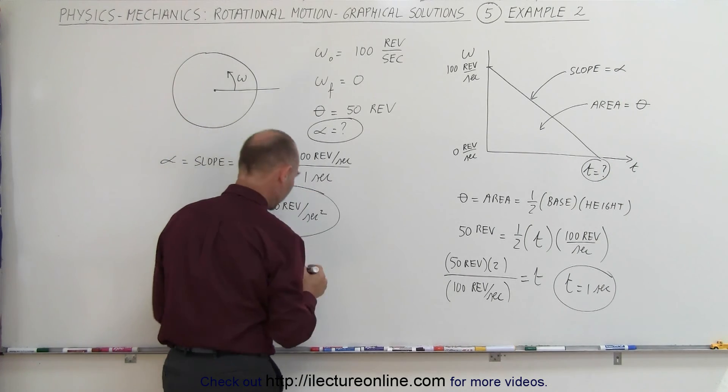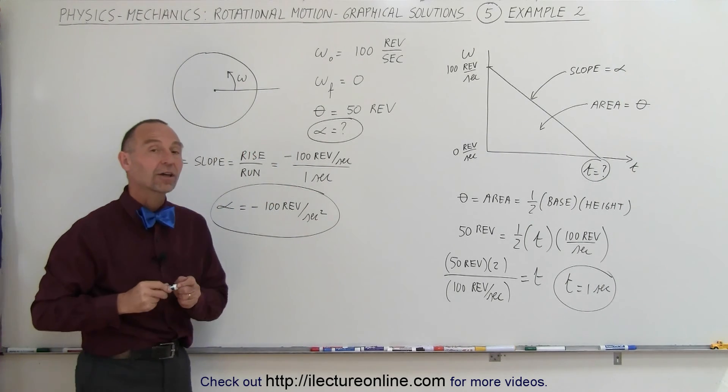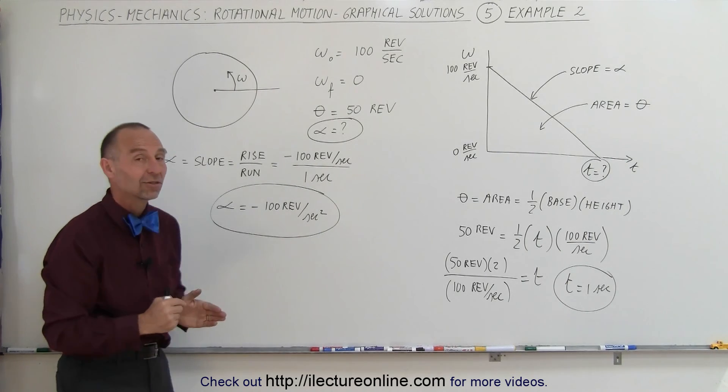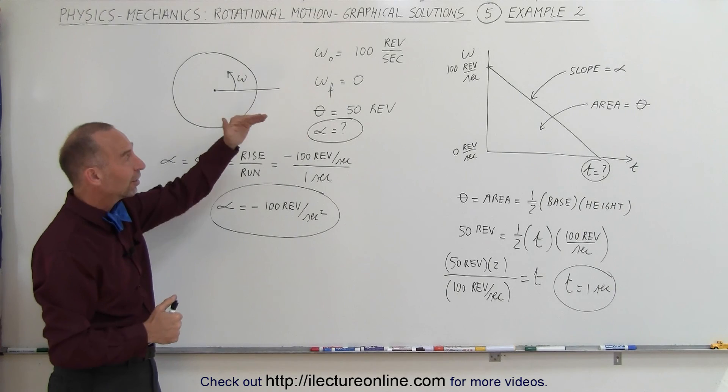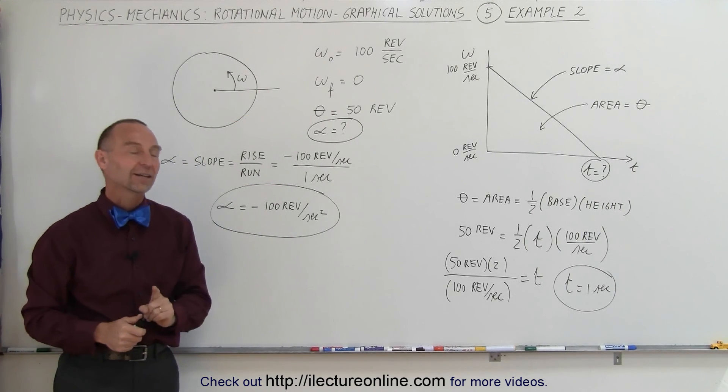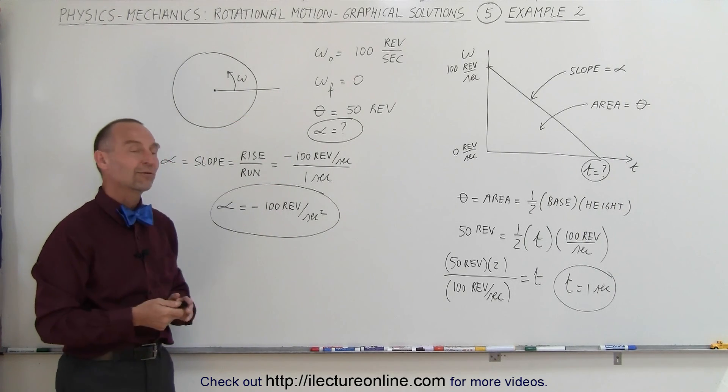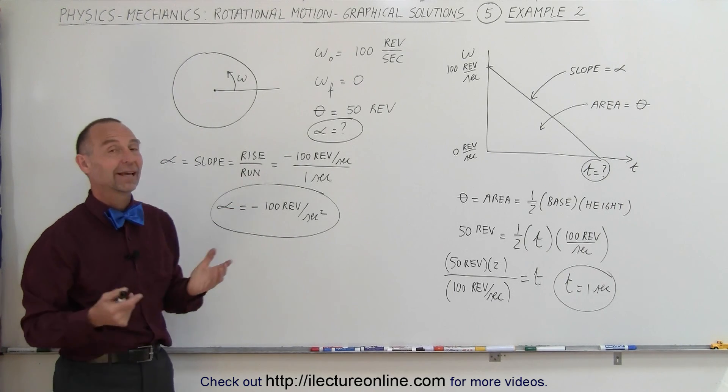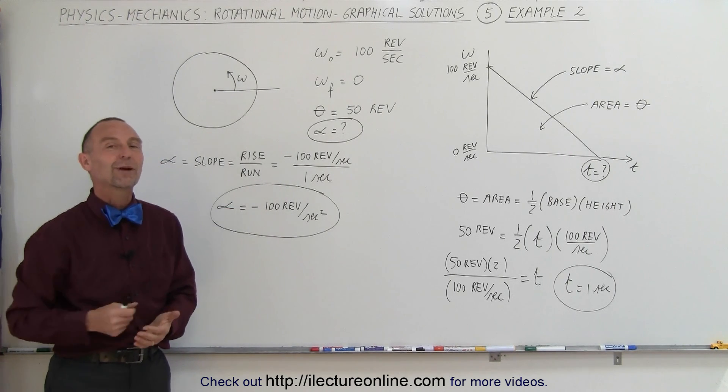This means that each second, the rotational velocity is 100 revolutions per second less than the second before. Of course, in this case, it only did that for one second, going from 100 to zero in one second. That would be the angular acceleration. That's how we do that using graphical solutions.